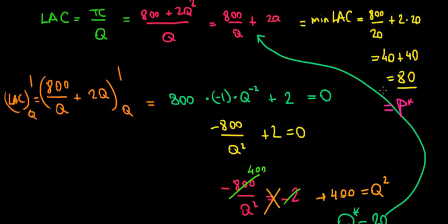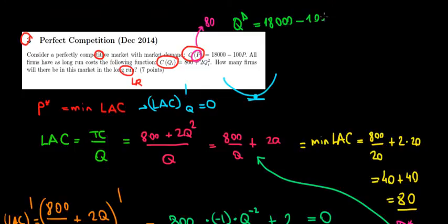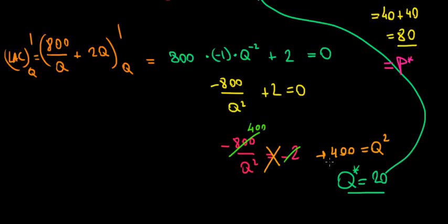Since this is the long-run price, we can determine total market demand. Looking at the market demand function as a function of price, with P equal to 80, the quantity demanded in the whole market is 18,000 minus 100 times 80, which equals 18,000 minus 8,000, giving us 10,000 units in the entire market.